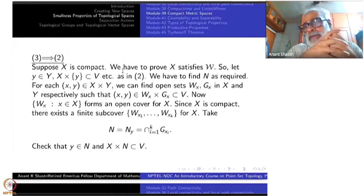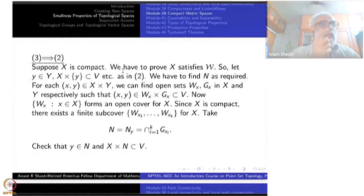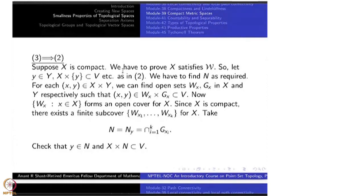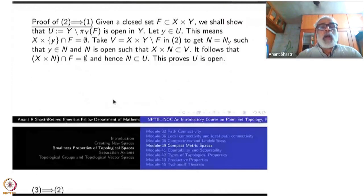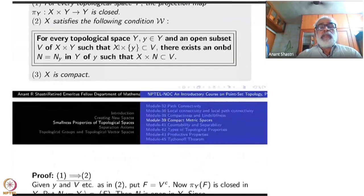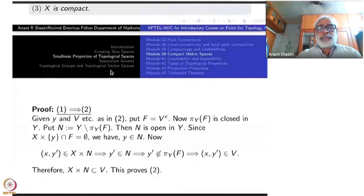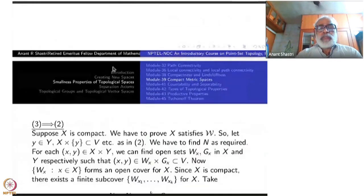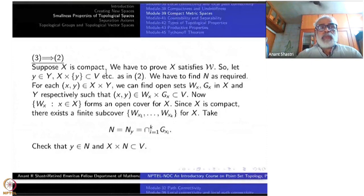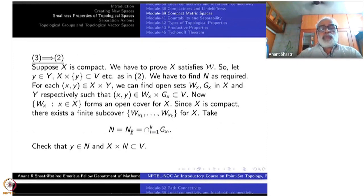Now I come to 3 implies 2, which is called the Wallis theorem or Tube Lemma. Compactness implies property W — that is the classical result. And then finally 2 implies 3, which I will prove last. Let X be compact. We have to prove X satisfies property W. We start with y ∈ Y and an open V with X × {y} ⊆ V, and we must find N open, y ∈ N, with X × N ⊆ V.